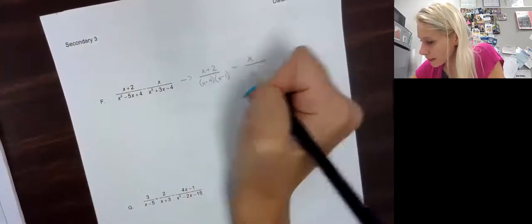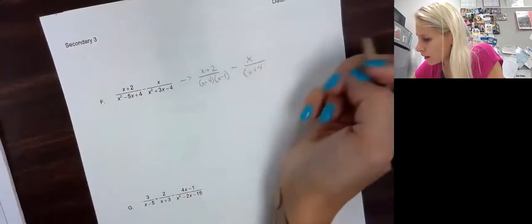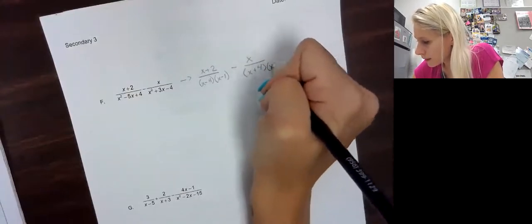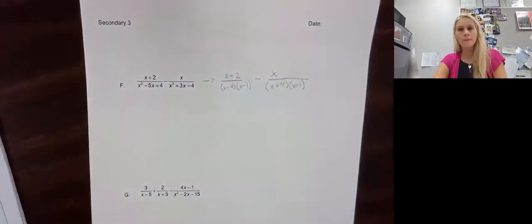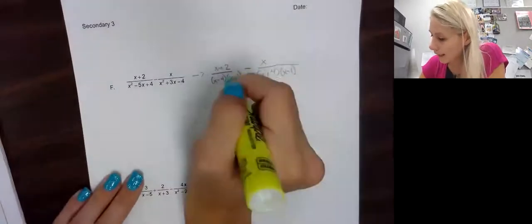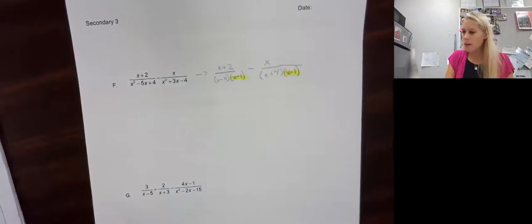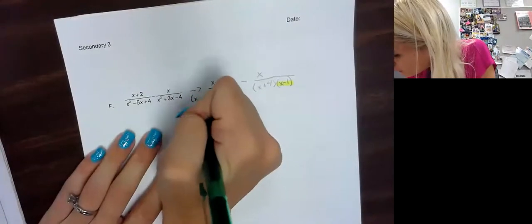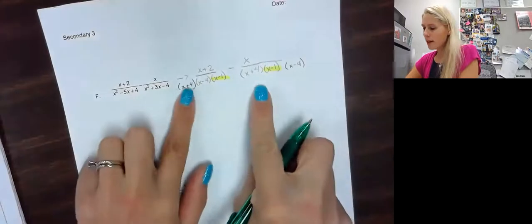And then x over the other denominator, which factors to x plus 4 times x minus 1. Now I'll highlight what they have in common: they already share x minus 1. So this one is missing x plus 4, and this one is missing x minus 4. Now do they look common? Same, same, same — good.